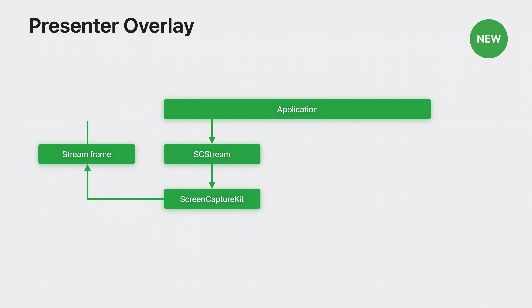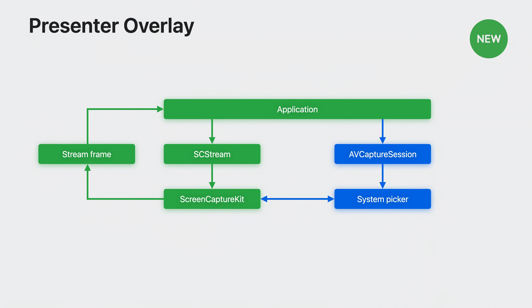Currently, a stream has content frames sent to its process from Screen Capture Kit. When an application starts using the camera during an active stream, Presenter Overlay is made available in the video menu item. Once enabled, Screen Capture Kit will take the camera and apply the rendering to the selected stream that your application is already running. You will get the composited frames automatically from the active stream.